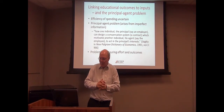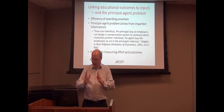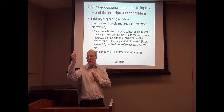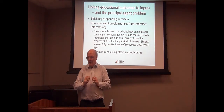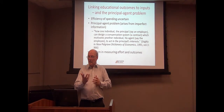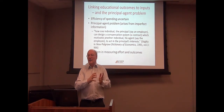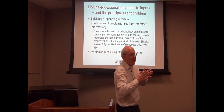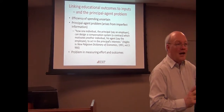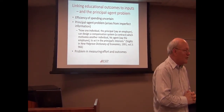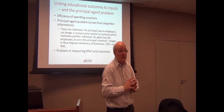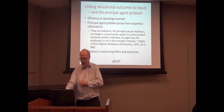The principal-agent problem, according to Stiglitz, is how one individual — the principal, not a school principal but someone who wants to get somebody else to do work on their behalf — can design a compensation system, contract, or compact which motivates another individual, the agent (for instance an employee), to act in the principal's interest. Our problem here is in measuring effort and outcomes.